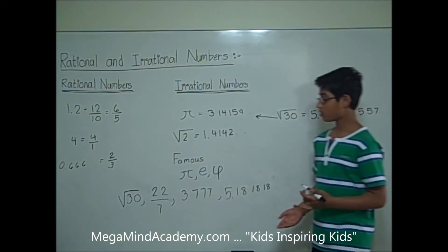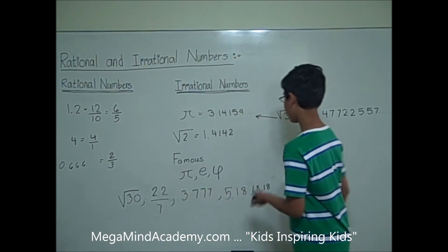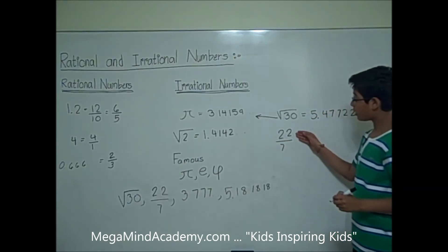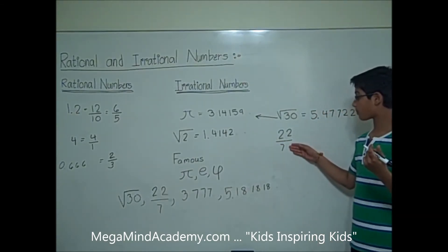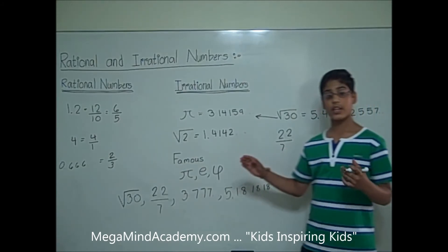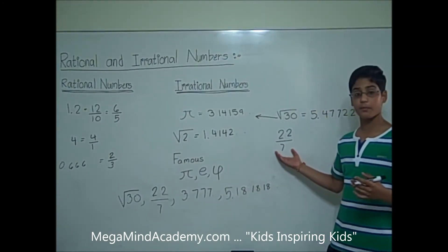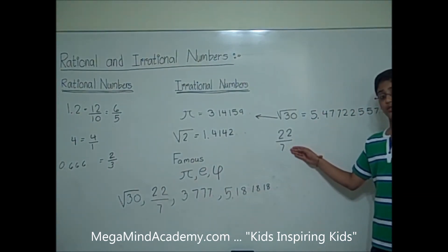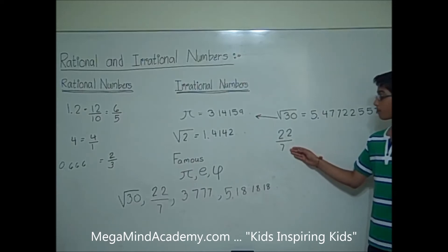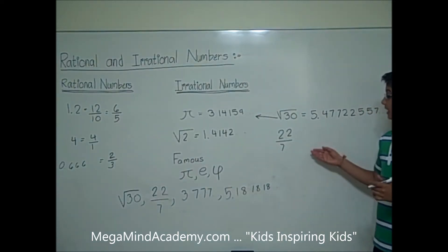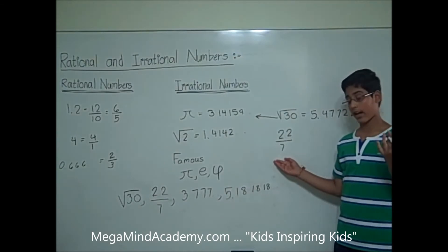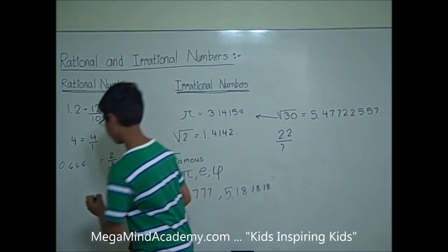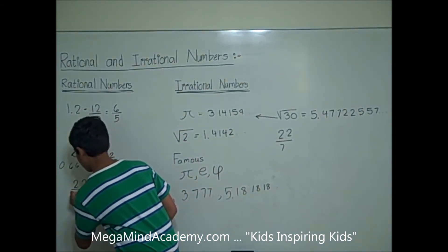Now let's go to the next example: 22 over 7. We know that 22 over 7 is a fraction, and rational numbers are numbers that can be made into a simple fraction. So 22 over 7 is a rational number because it is a simple fraction.